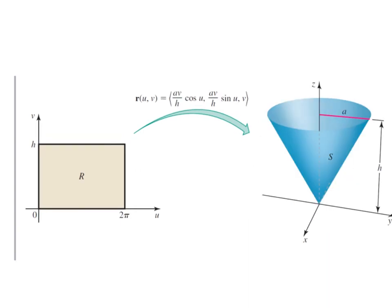To generate a cone in XYZ space, we take our rectangle — 0 to 2π on the U-axis, 0 to H on the V-axis — and apply (AV/H cos U, AV/H sin U, V). Changing the coefficient to AV/H is what takes the cylinder and gives us a cone instead.